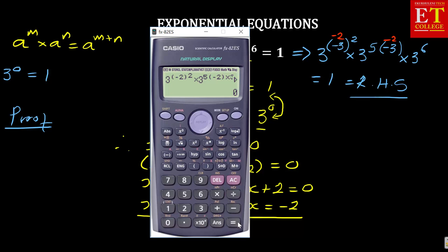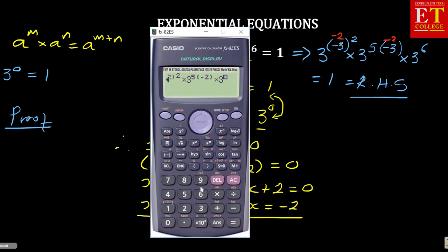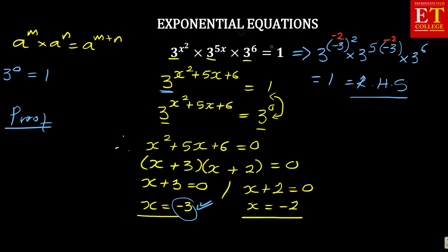So, in this one, what am I getting? I'm getting 1. Let me just play back and see if everything is correct — I think I made a mistake there. I'm supposed to go forward and say times 3 to the power of 6. I'm getting 1. So, also x equal to negative 2 is correct. So, this is how you can prove it.